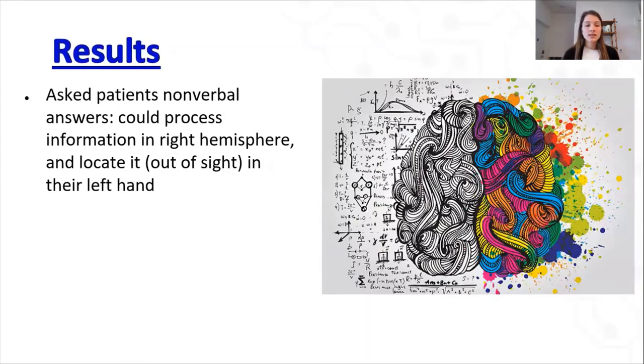So they conducted this study again, and instead they asked the patients for nonverbal answers, and they recognized that the patients could process the information in the right hemisphere and locate it out of sight in their left hand, but they couldn't name the object in their left hand because that tactile information was going to the right hemisphere, while the language abilities are in your left hemisphere.